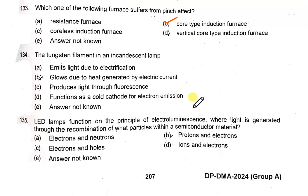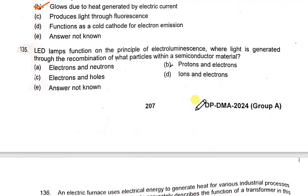The tungsten filament in an incandescent lamp glows due to heat generated by the electric current. LED lamps function on the principle of electroluminescence, where light is generated through the recombination of electrons and holes within a semiconductor material.